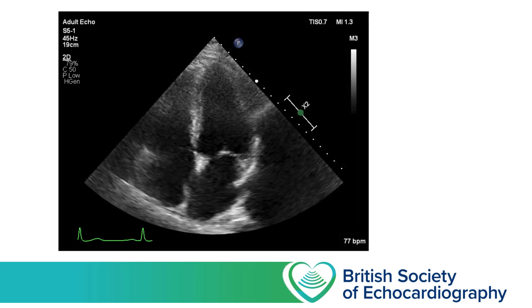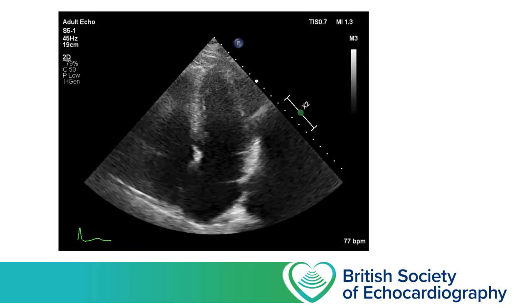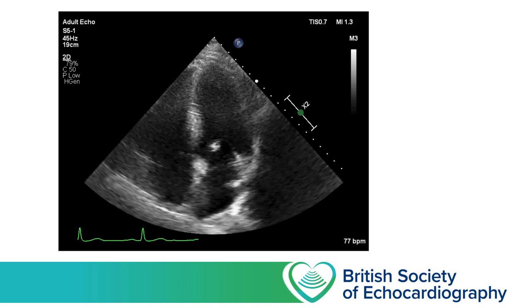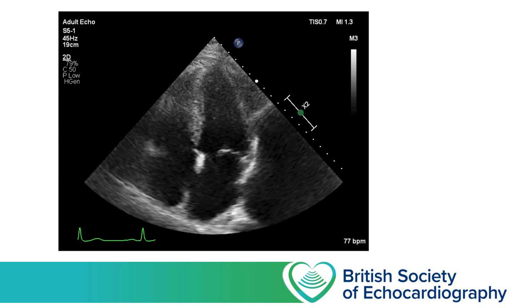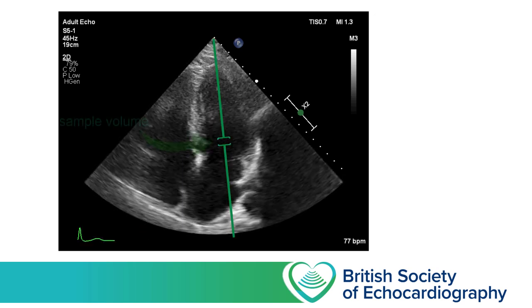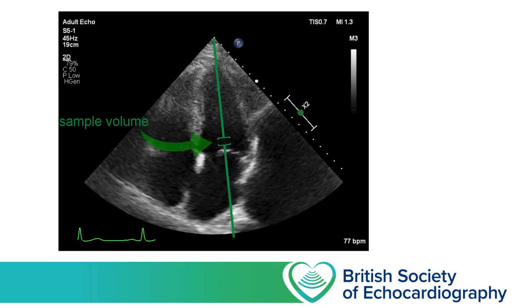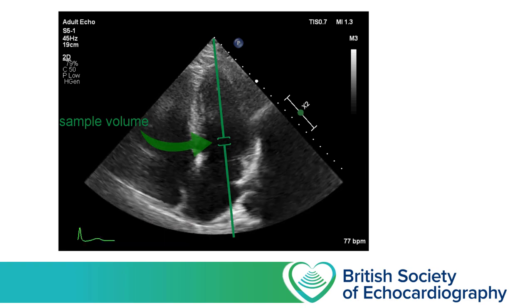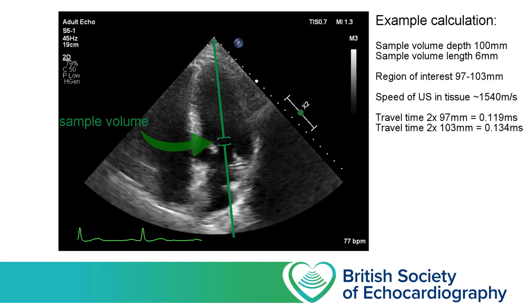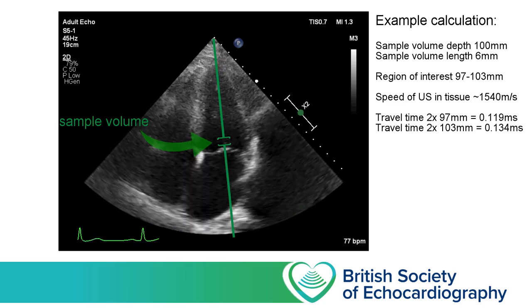So how can we exploit this principle to generate a practically useful image that demonstrates flow within the heart? Let's consider how we can determine and represent the flow of blood at a single point in space. This is an apical 4 chamber view, and let's imagine we're interested in the flow of blood from the left atrium to the left ventricle during diastole. We can tell the ultrasound software the specific area we're interested in by laying a cursor down the length of the left ventricle, and placing a small bracket — our sample volume — on that cursor. In this example our sample volume is 10 centimetres from the probe and has a length of 6 millimetres.